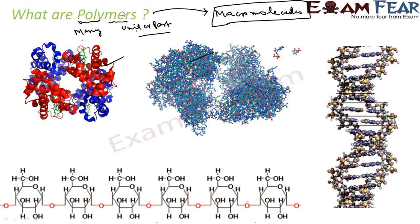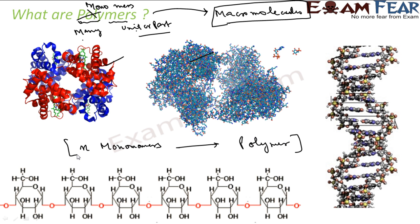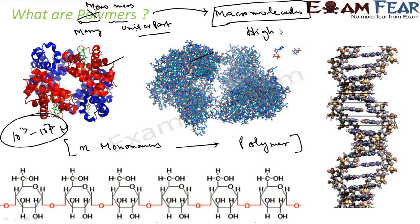These repeated units are called monomers. If you use the word 'mono', monomers — so many monomers will give you polymers. N monomers will give you one polymer. Polymers means many units; monomer means one unit. So the basic building block of a polymer is the monomer. The molecular mass of a polymer is very high — something like 10 to the power 3 to 10 to the power 7 — very, very high.